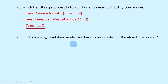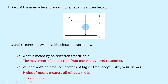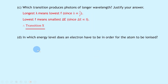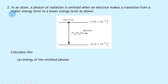Lastly, part d says: in which energy level does an electron have to be in order for the atom to be ionized? Looking at the diagram, the highest energy level possible is E2, so the answer is simply E2.